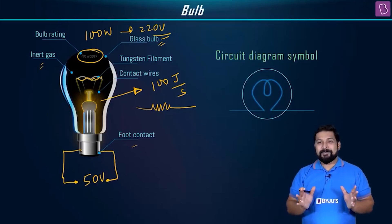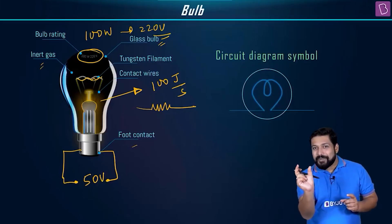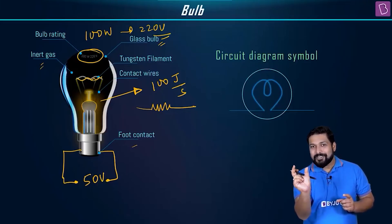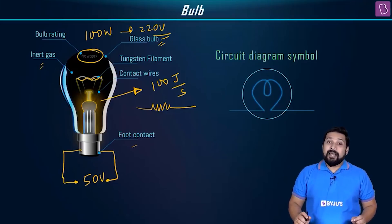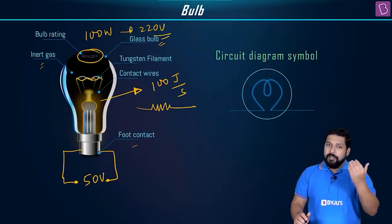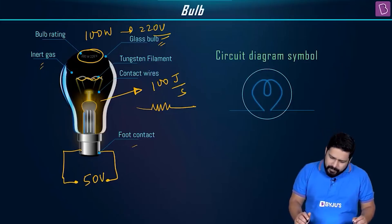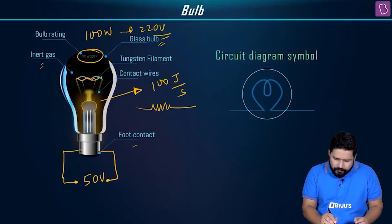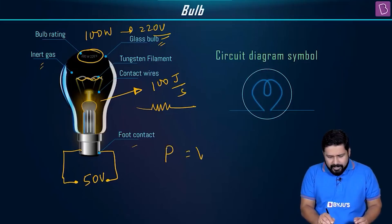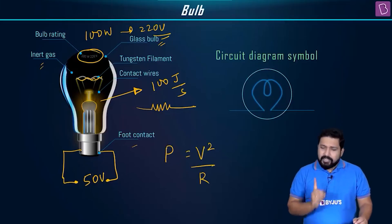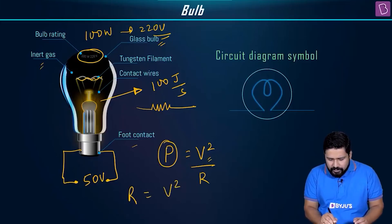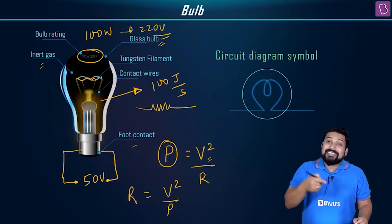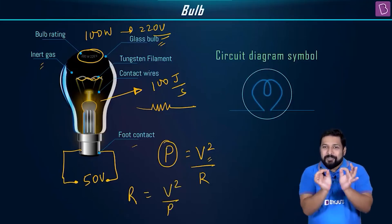Only on the condition of a 220-volt supply will you get 100 watts of power dissipated. Otherwise you will get less power. Using the formula P = V²/R, we can see that power depends on voltage. Rearranging, resistance R = V²/P.